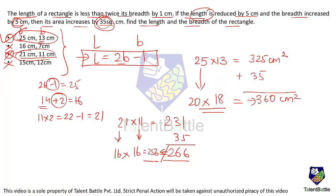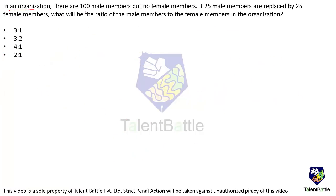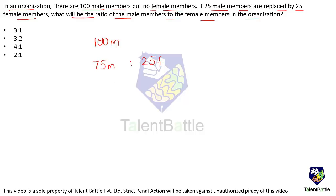Sample Q7 — Ratio: In an organization there are 100 male members and no female members. If 25 male members are replaced by 25 female members, there are now 75 males and 25 females. The ratio of male to female members is 75:25 = 3:1.